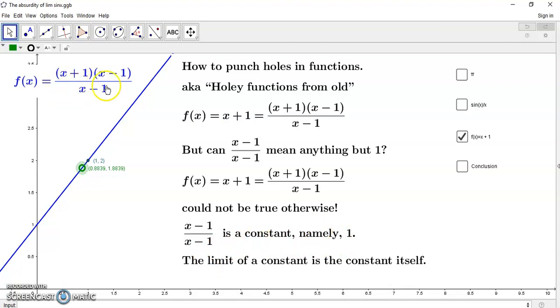It can't mean anything else. So if f of x is equal to x plus 1, and it's equal to this fraction that you see here, this wouldn't be true if x minus 1 over x minus 1 could mean anything else but 1. So x minus 1 over x minus 1 is a constant, namely 1.